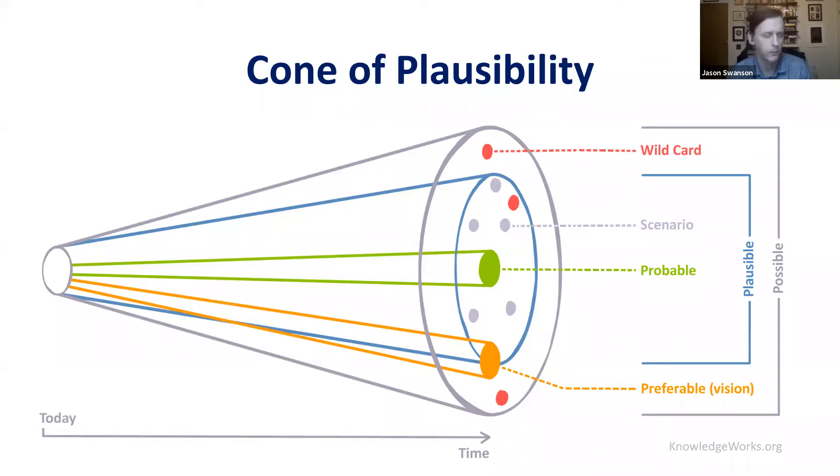A lot of times, futurists will refer to what we call the three Ps. Those include plausible futures. These are things that, if we look at the bounds of uncertainty and change, have maybe a decent chance of happening.